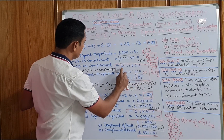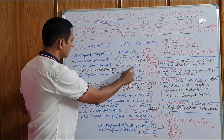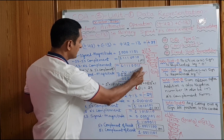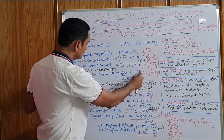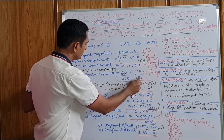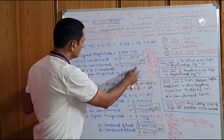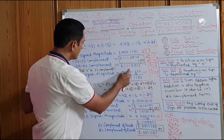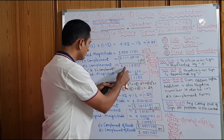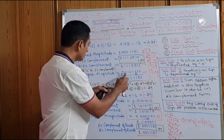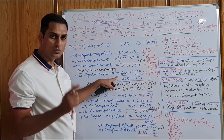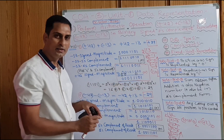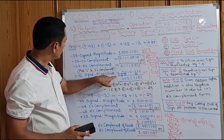This is 13's 2's complement number, and this is 42's signed magnitude. Adding these two: the result is 0, 0, 0, 1, 1, 1, 0, 1. There is a carry beyond 8 bits — that is note point 4. Any carry out of the sign bit position should be discarded. So 8 bits are over and the extra carry is discarded.